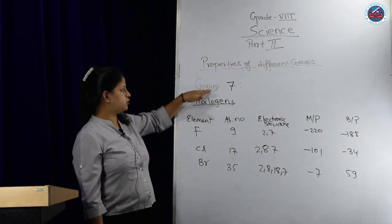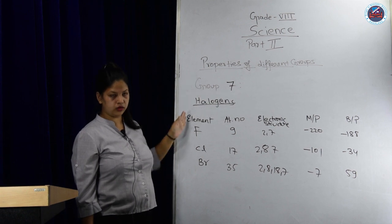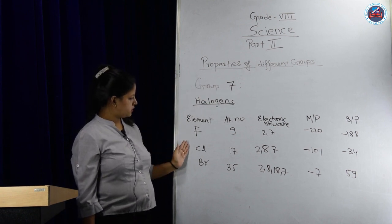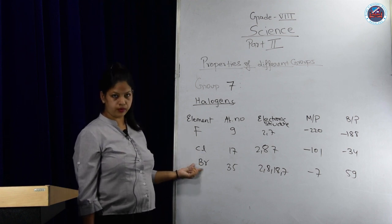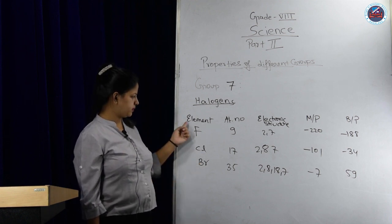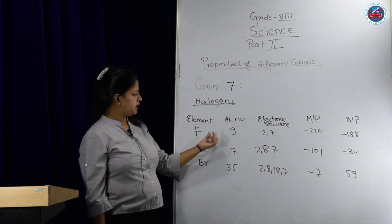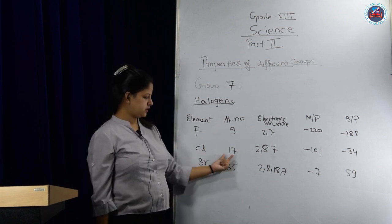This is halogens, we call them group 7 elements. In halogens, there is F for fluorine, Cl for chlorine, and Br for bromine. It goes on but we will be comparing these three. Fluorine's atomic number is 9, chlorine is 17, and bromine is 35.